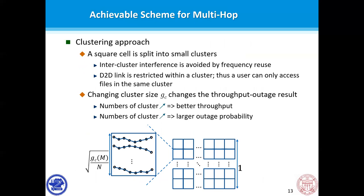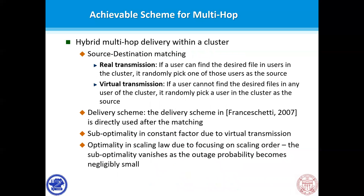To derive the scaling law, the achievable scheme uses a clustering approach in which the area is divided into small clusters. Users in the same cluster use D2D communication for delivery. Different clusters can be activated at the same time, and a frequency reuse approach is adapted to avoid inter-cluster interference. Users are assumed to access only other users in the same cluster. The essence of this scheme is to trade off throughput and outage by changing the cluster size. If we increase the cluster size, there will be more users in each cluster, leading to better outage performance; however, the per-user throughput could decrease.